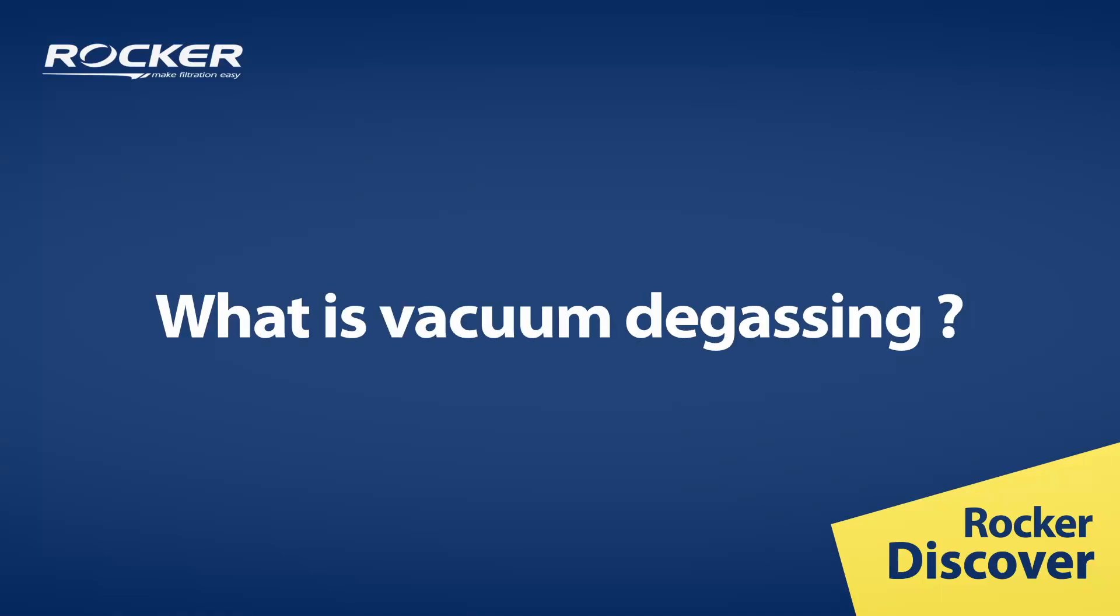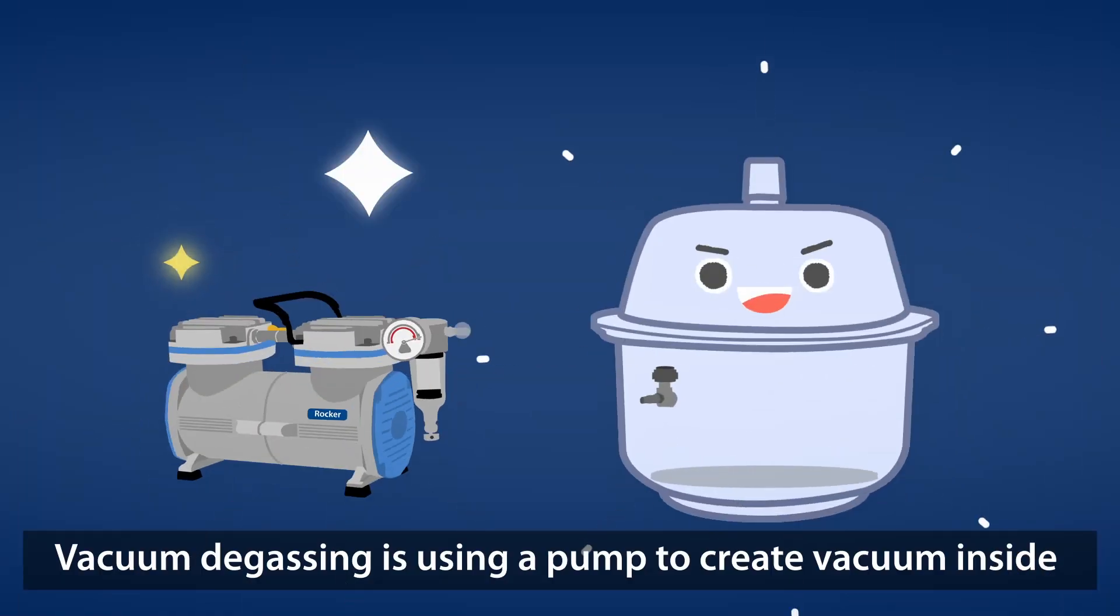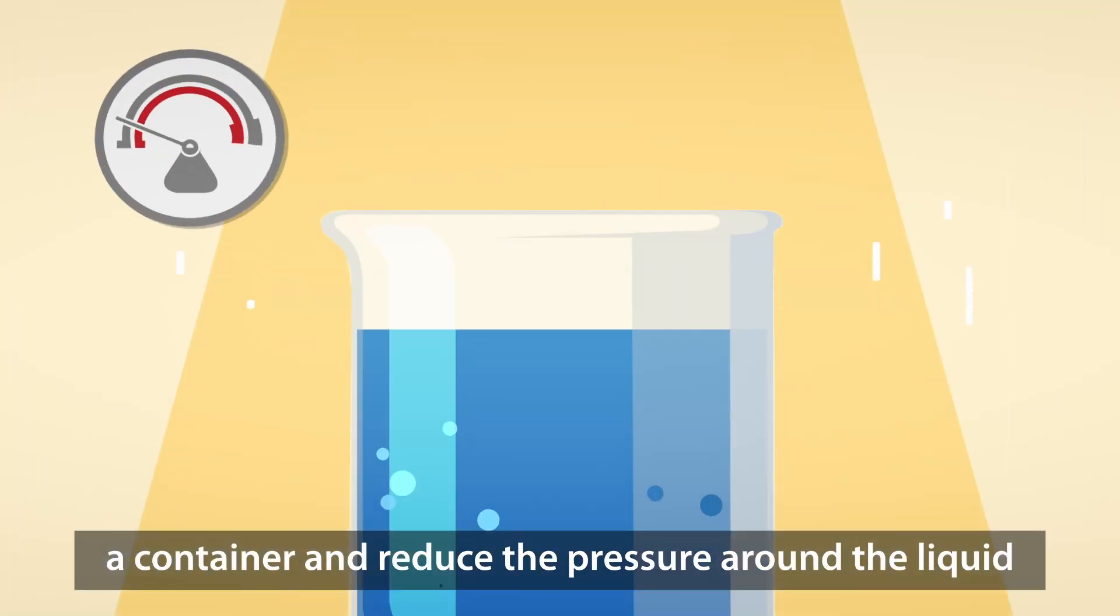What is vacuum degassing? Vacuum degassing is using a pump to create vacuum inside a container and reduce the pressure around the liquid.